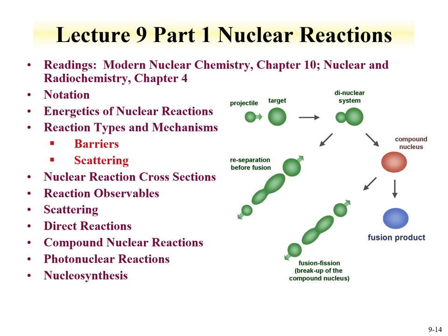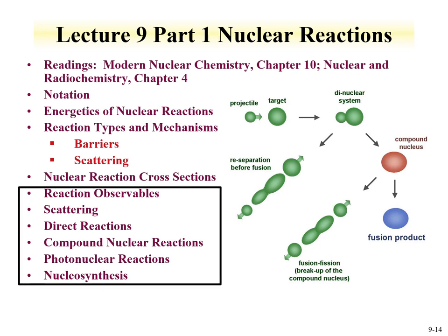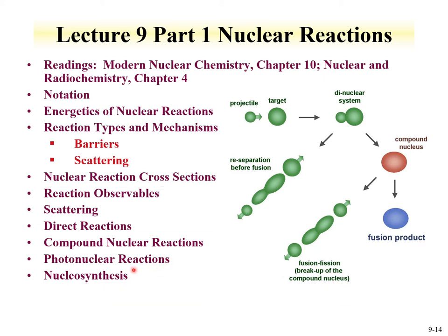This concludes Part 1 of Lecture 9 on nuclear reactions. Part 2 covers reaction observables, scattering, direct reactions, compound nuclear reactions, photonuclear reactions, and nucleosynthesis. Please continue on to that lecture when you've completed this one.